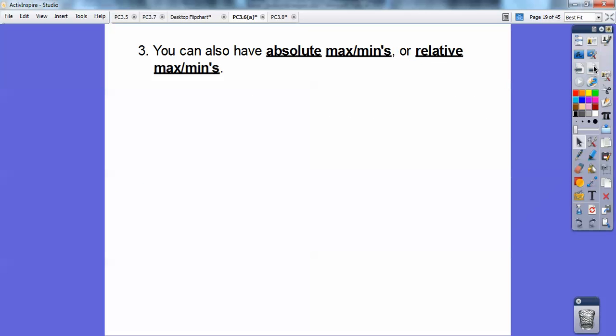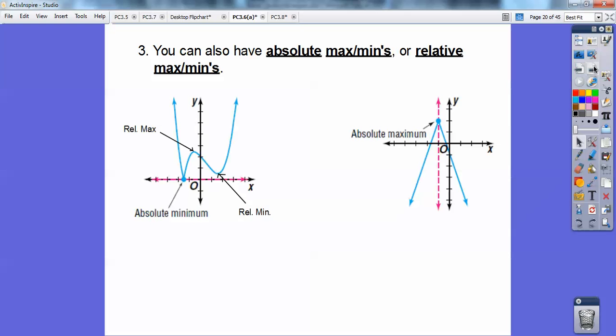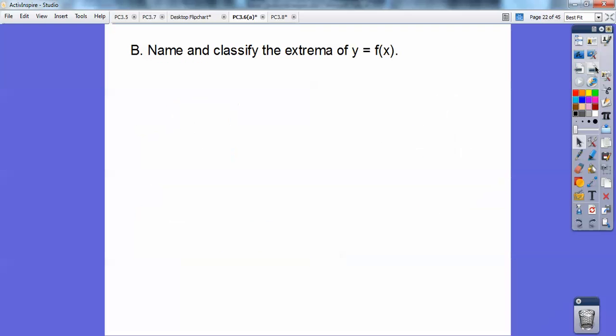You can also have absolute maximums or absolute minimums or relative mins or relative maxes. Take this graph, for example. Can you see this is as far down as the graph goes? That's why it's called an absolute minimum. This one goes down but it's not the farthest down, but it's called a relative minimum right here. This is a relative max because it's not the highest it goes. Over here, here's an absolute maximum. All of these are called extremas, as are points of inflection.